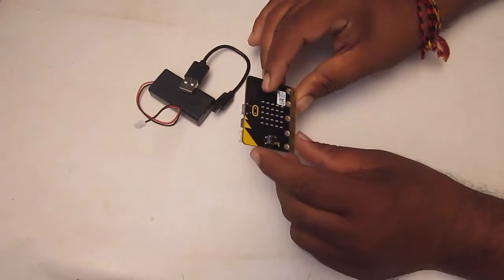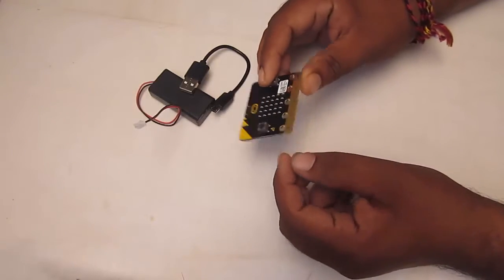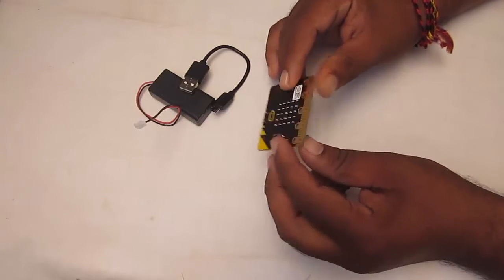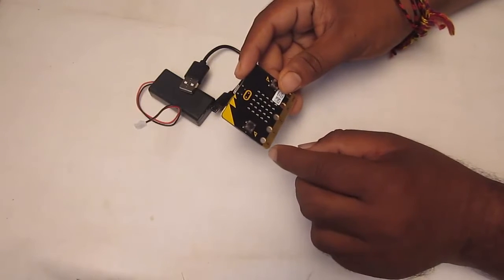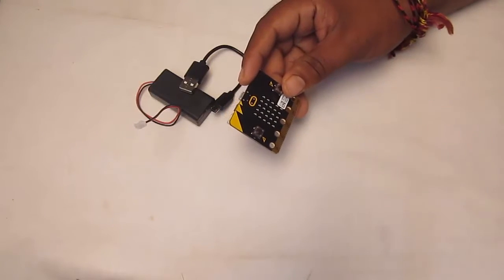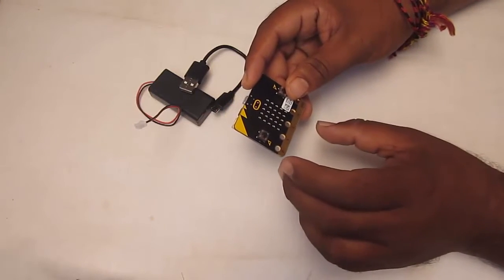At the bottom you'll find the large GPIOs for crocodile clips or banana clips. You can use pins 0, 1, 2, and the 3-volt and ground. There are also small GPIO pads from pin 0 to perhaps 21 pins.